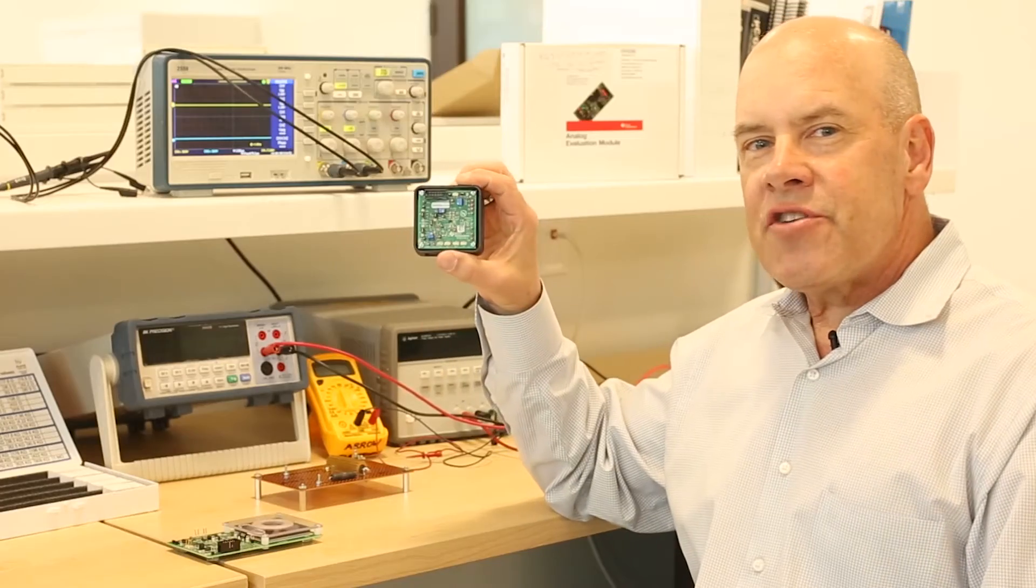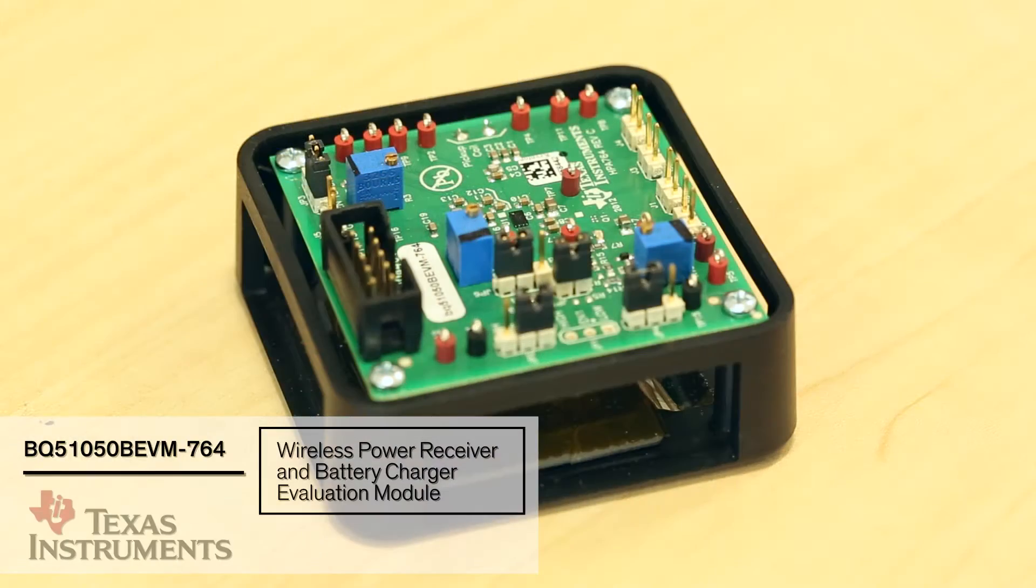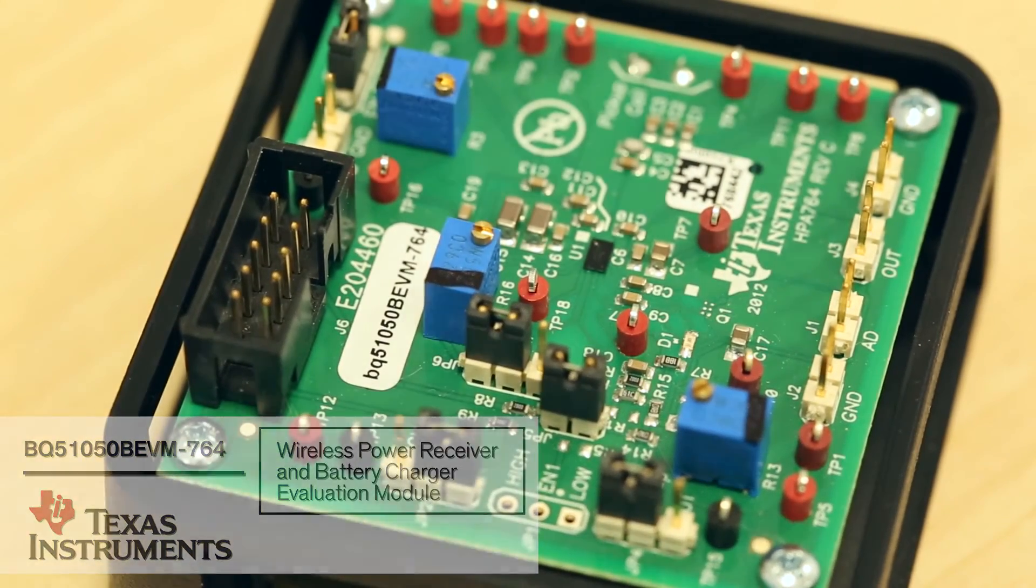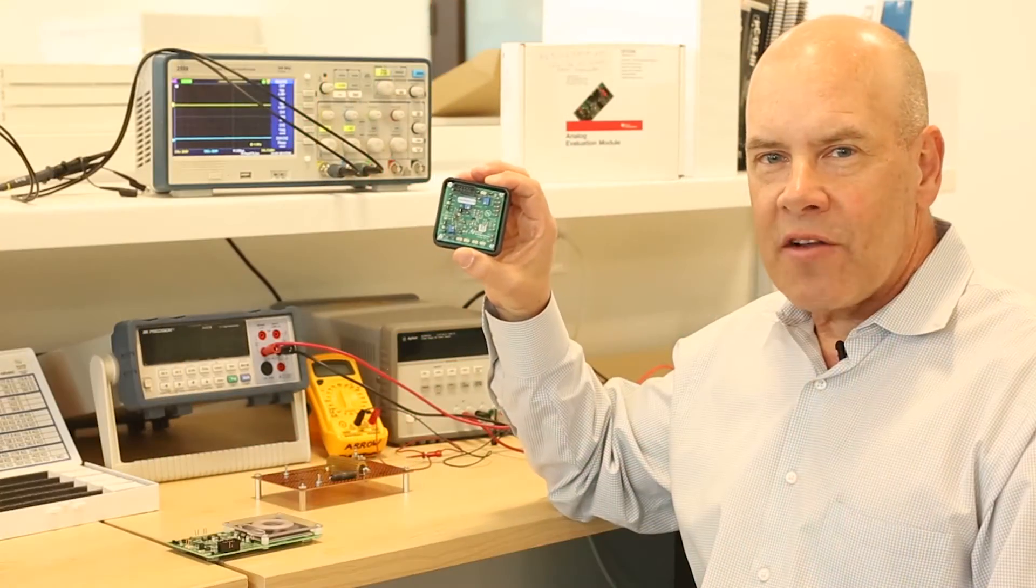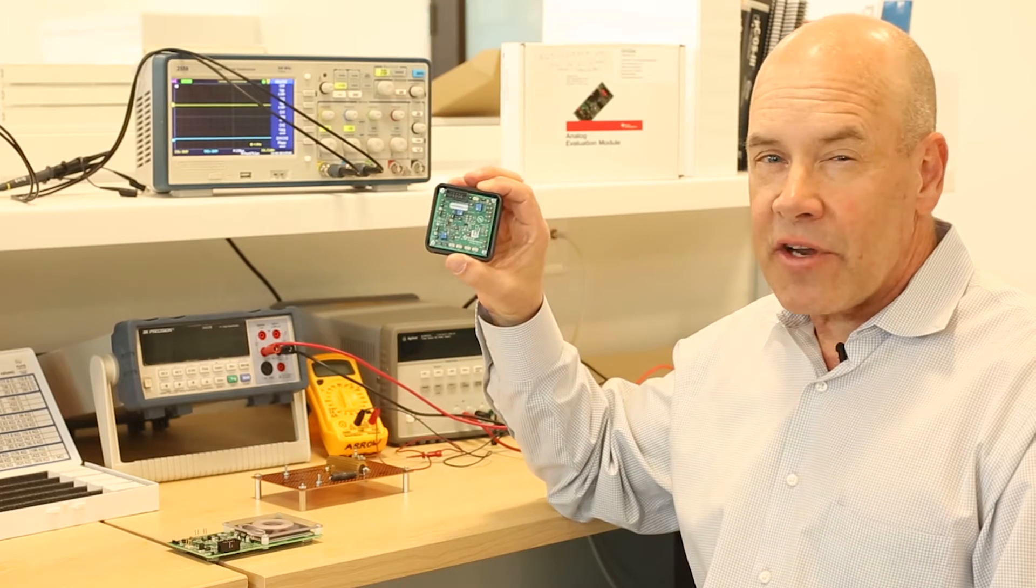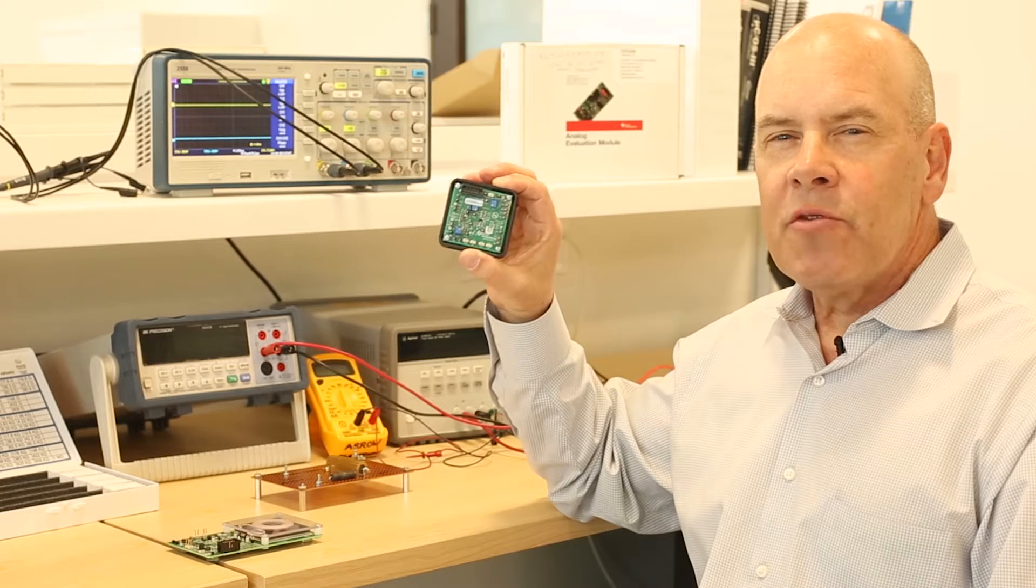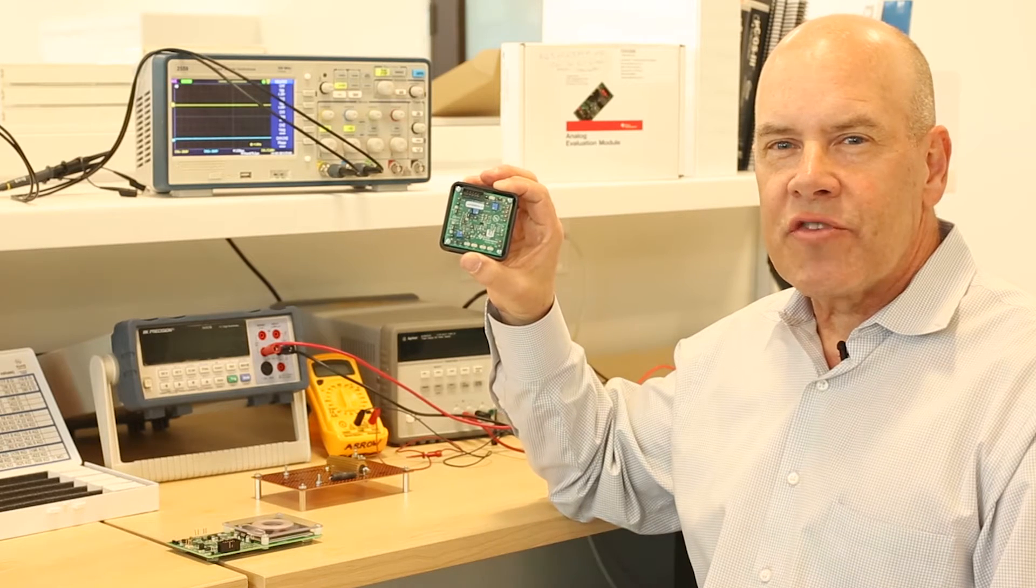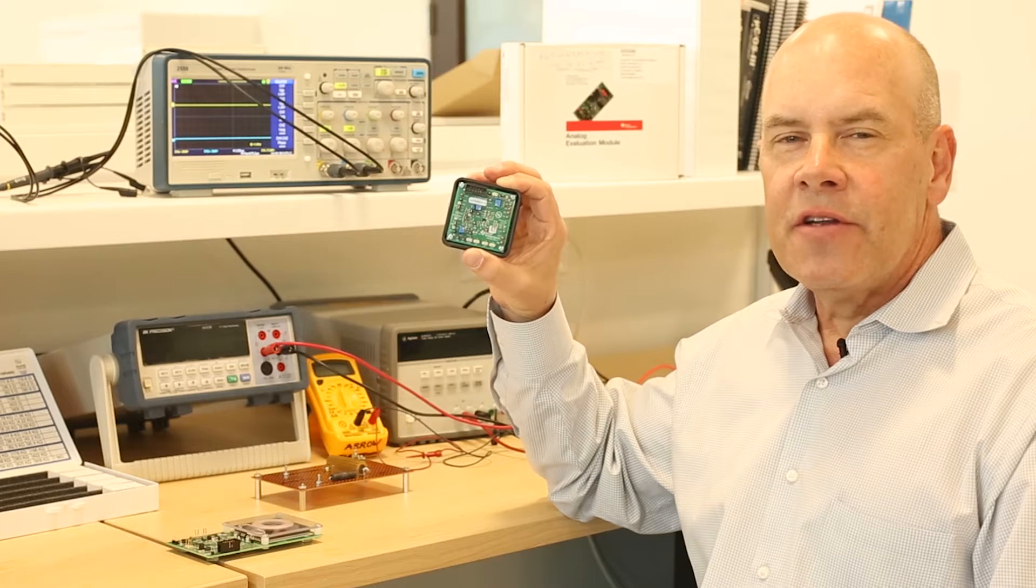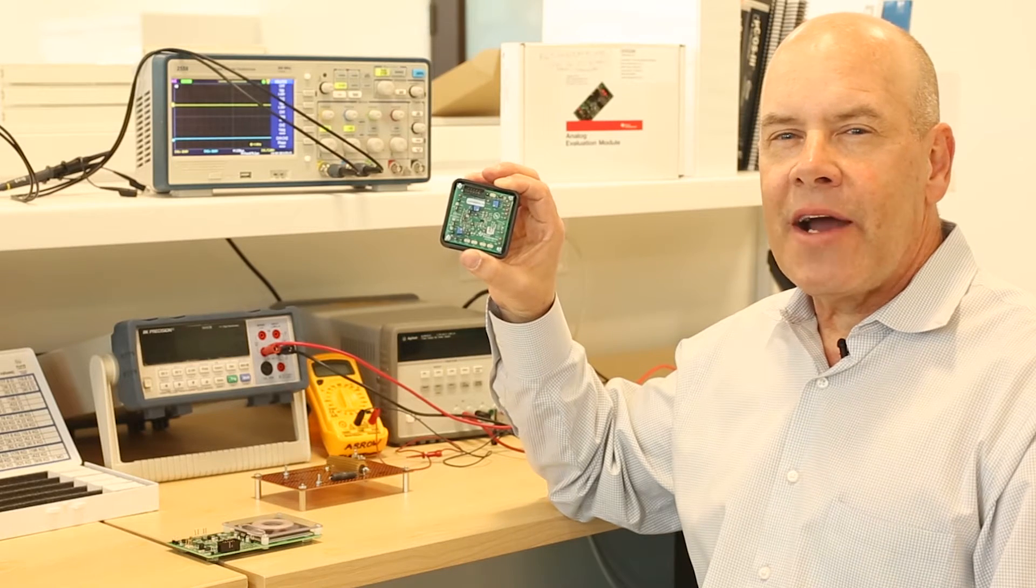This is the evaluation board for the BQ51050B wireless power receiver and battery charger. This is unique because it incorporates both functions, wireless power receiving and battery charging into one integrated circuit. When coupled with a wireless power transmitter, this will supply up to one and a half amps of charging current to a single cell lithium ion battery.